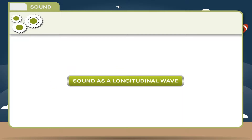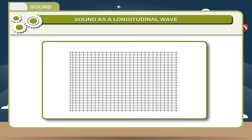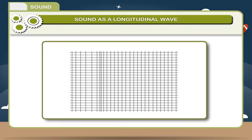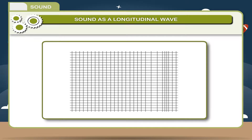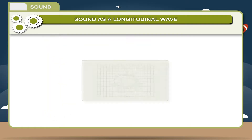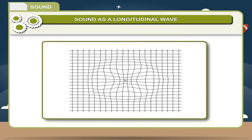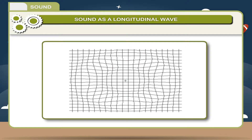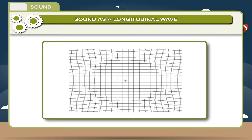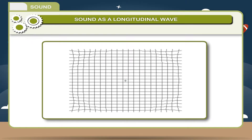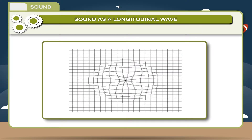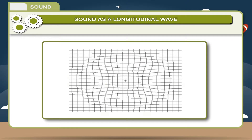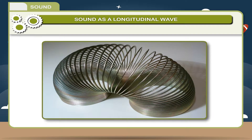Sound as a Longitudinal Wave: For a sound wave travelling through air, the vibration of the particles are best described as longitudinal. Longitudinal waves are waves in which the motion of the individual particles of the medium is in a direction that is parallel to the direction of energy transport or wave propagation.